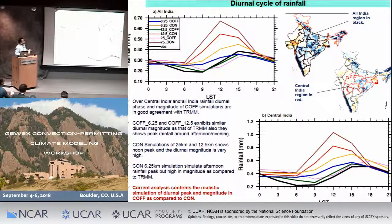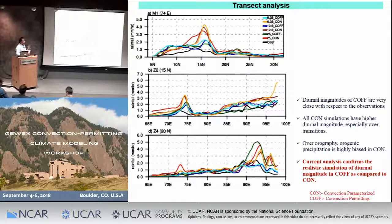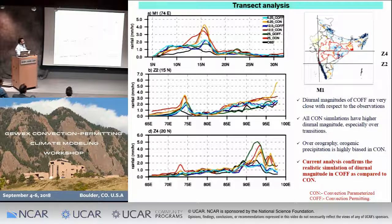Checking the diurnal cycle over two regions — the entire Indian region and central India — the diurnal phase and magnitude at 6.25 km off is pretty close to observations, whereas the parameterized simulations show very high peaks with noon-only rainfall over all India and central India. This confirms the realistic simulation of diurnal peak and magnitude in convection-off compared to convection-on. At different north-south transects, convection-off experiments are closer to observations but the diurnal peak has reduced over some areas.